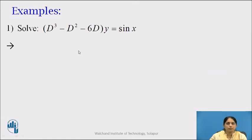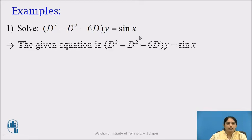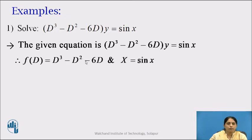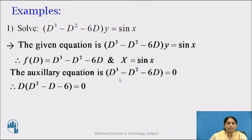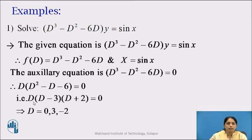Now let us go to Example 1: (D³ − D² − 6D)y = sin x. Here f(D) = D³ − D² − 6D and X = sin x. The auxiliary equation is D³ − D² − 6D = 0. Taking D as common: D(D² − D − 6) = 0, that is D(D − 3)(D + 2) = 0, giving D = 0, 3, −2 — real and distinct roots.